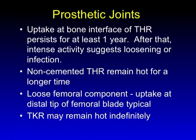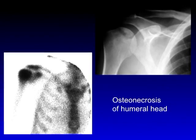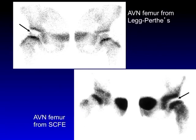You see uptake around prosthetic joints — hip replacements for a year or two — but it's very variable, so it's hard to know whether there's a complication unless you have several data points. If you have loosening of the femoral component, sometimes you get specific uptake at the distal tip because of motion there. Knee replacements are very difficult to evaluate because they can remain hot indefinitely. If you do a three-phase study and see a lot of hyperemia, that's a bad sign and probably means there's a complication. Osteonecrosis is typically hot at the time of imaging because of bone remodeling. Here's a typical steroid-induced osteonecrosis of the humeral head with very intense uptake. If you cannot deliver any tracer because of an avascular phenomenon, it would be cold — but usually osteonecrosis is going to be hot.